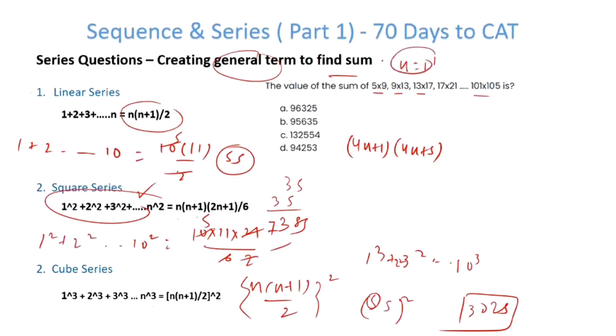If I put n=1, which is the first term, n becomes 1, so this becomes 5 and this becomes 9, giving 5×9. Similarly, if you put n=2, 4×2+1 is 9, and 4×2+5 is 13. So 9×13, that's the second term.